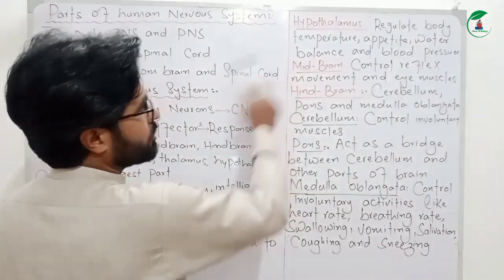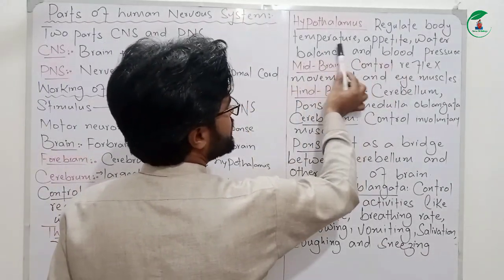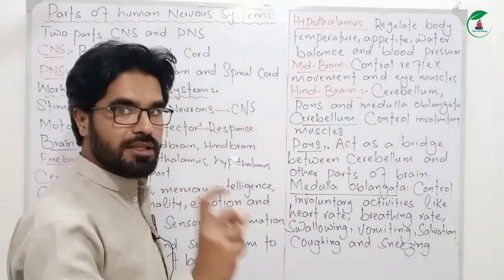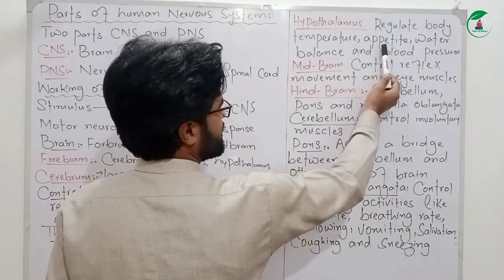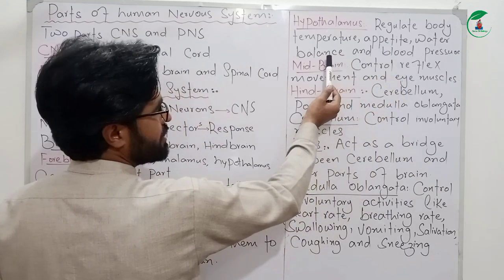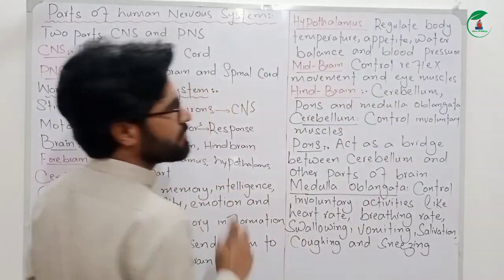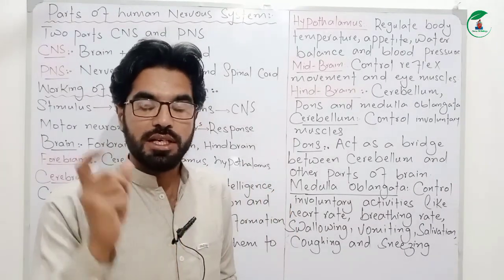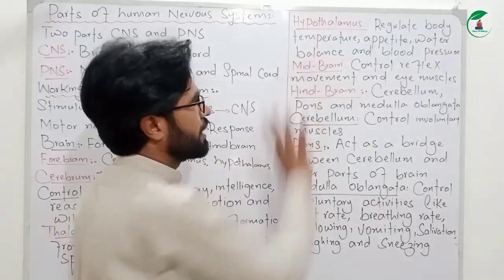The Hypothalamus regulates body temperature — whether the body is hot or cold. It also controls water balance, sleep-wake cycles, and blood pressure.